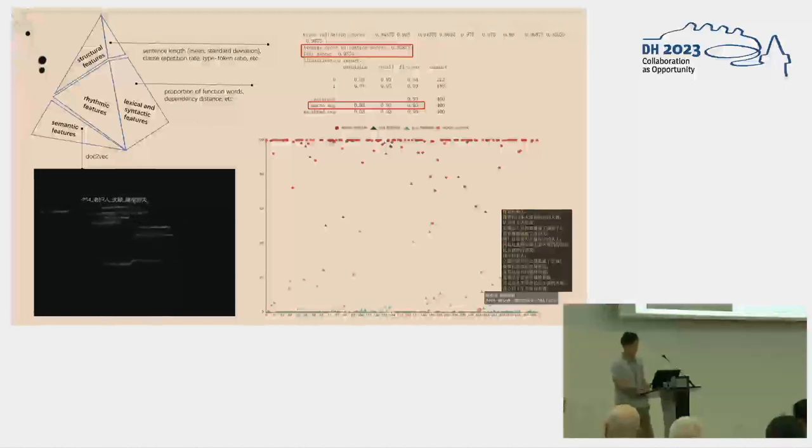The following graph illustrates the probability distribution of the model on the test set. The vertical axis represents the model's probability of judging a sample as a prose poem. Each point in the graph represents a poem sample, with the lower half being samples that the model identifies as neo-poems and the upper half being samples that the model identifies as prose poems. It is evident that the model's classification performance is clearly good.